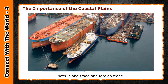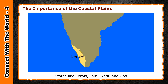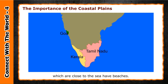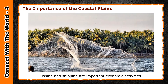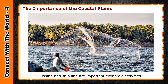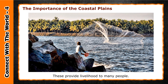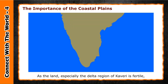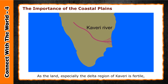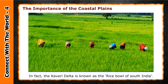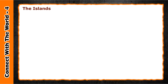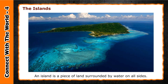The importance of the coastal plains: ports and harbors on the coast help the country engage in large-scale trading, both inland trade and foreign trade. States like Kerala, Tamil Nadu, and Goa, which are close to the sea, have beaches that attract tourists. Fishing and shipping are important economic activities that provide livelihood to many people. The land, especially the delta region of Kaveri, is fertile, and rice and plantation crops are cultivated. In fact, the Kaveri delta is known as the rice bowl of South India.